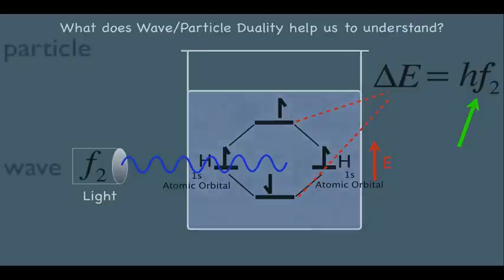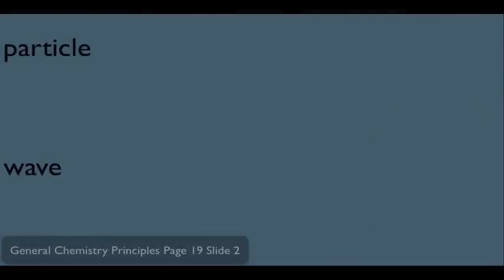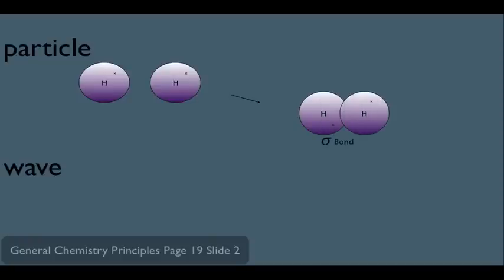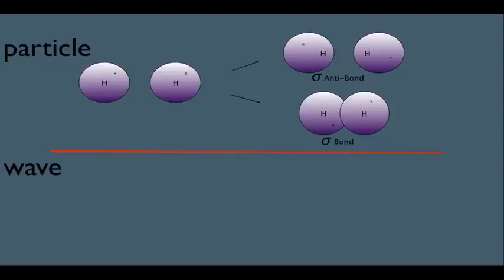In summary, we can think of electrons as particles — meaning they can come together via a sigma bond or an anti-sigma bond — and we can also think of the H2 molecule using the molecular orbital energy diagram if we think of electrons as waves.